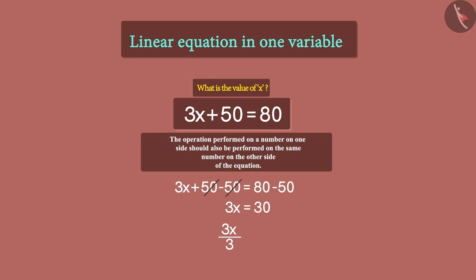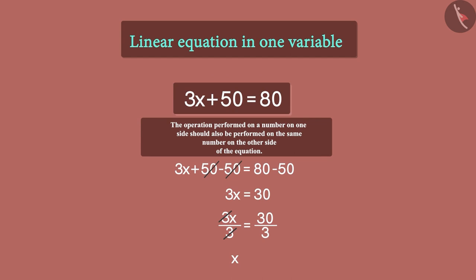But then, we have to divide by 3 on the right-hand side also. Now, 3 and 3 cancel each other on the left. And on the right-hand side, we can divide 30 by 3 to get 10. So, ultimately, we get the value of x as 10.